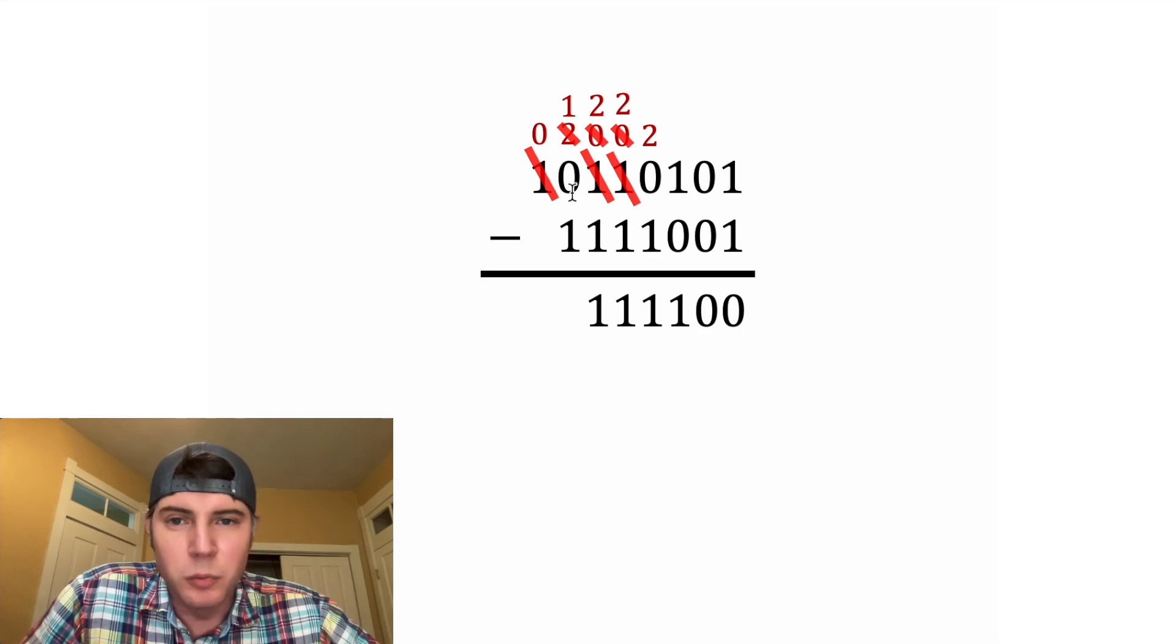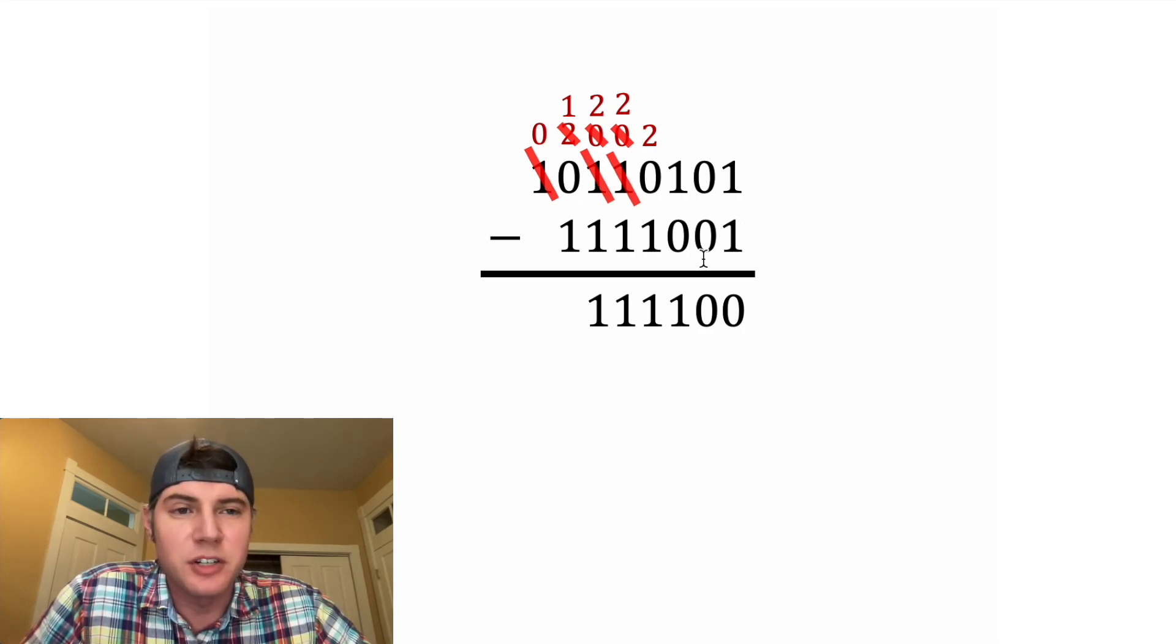So we don't need these last two 0s. So 10110101 minus 1111001 is equal to 111100.